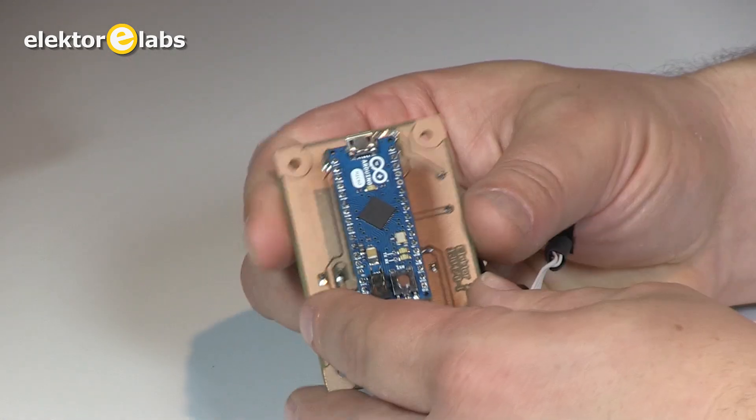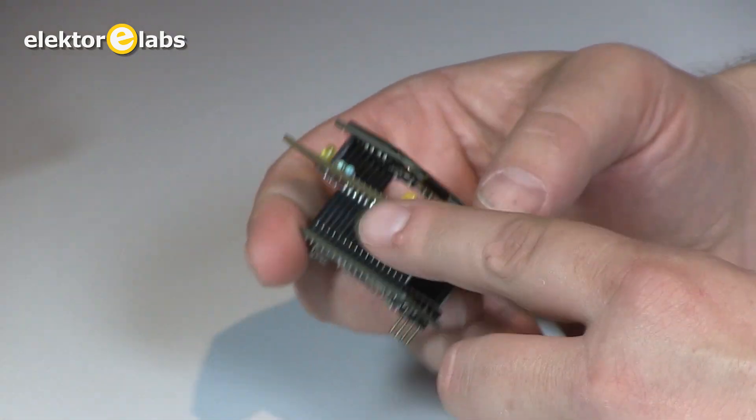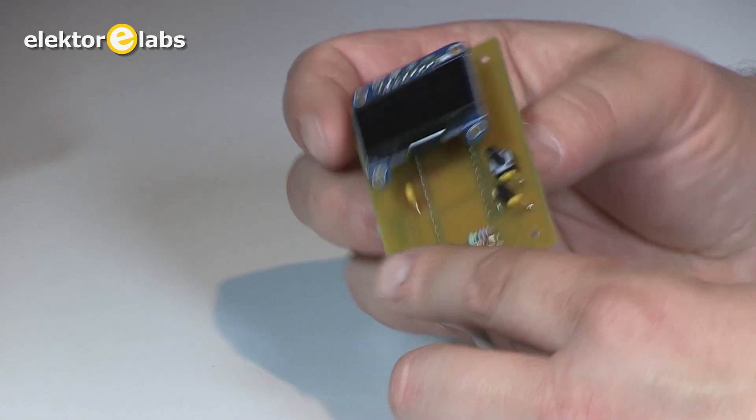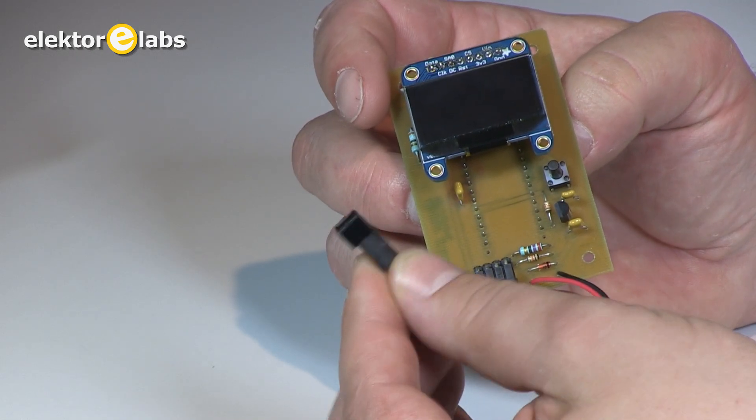This design features an Arduino micro board right here and an OLED display from Adafruit. The only input of the circuit is provided by a reflective optical sensor as you can see here.